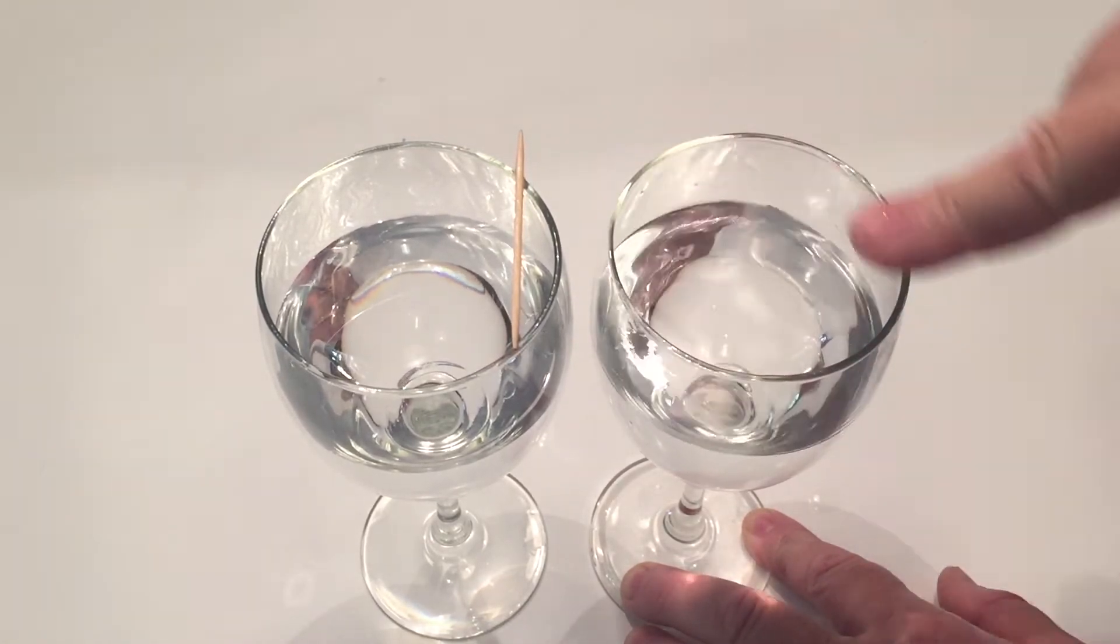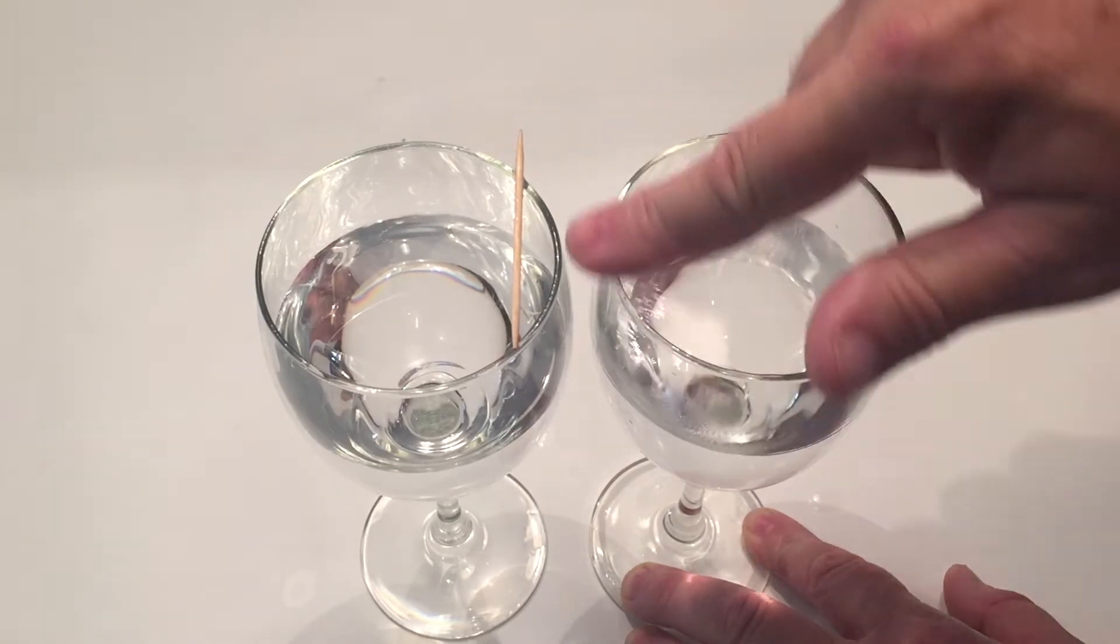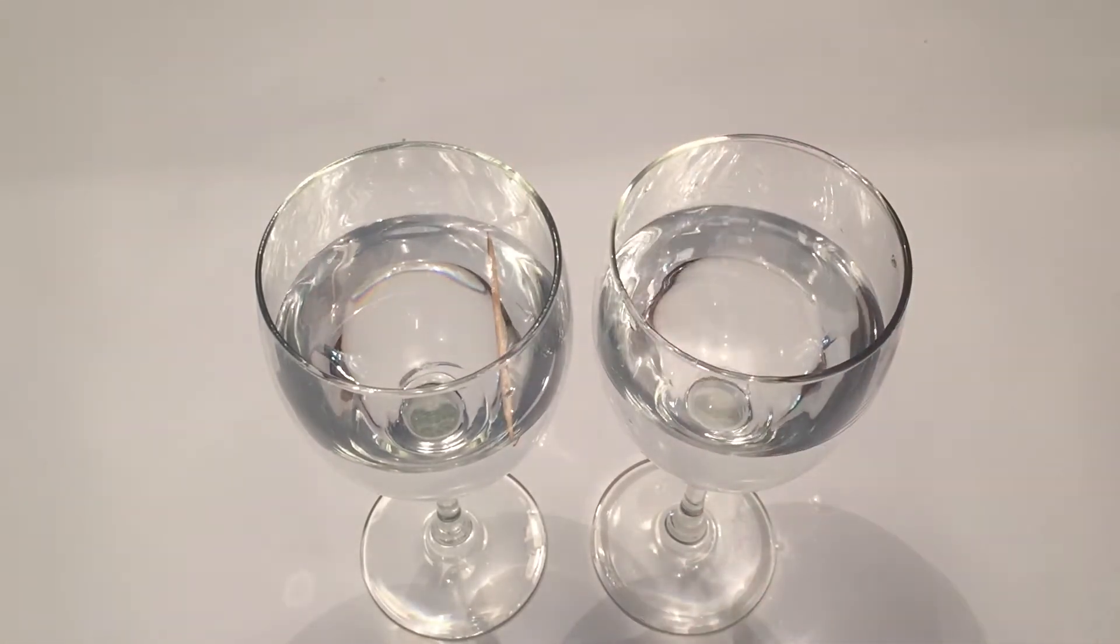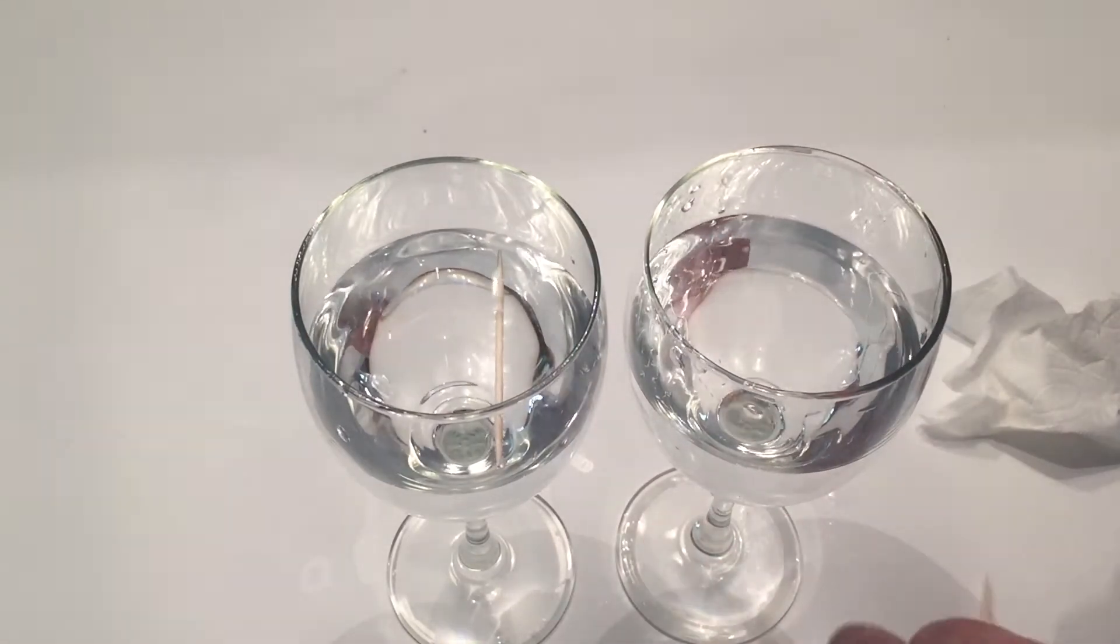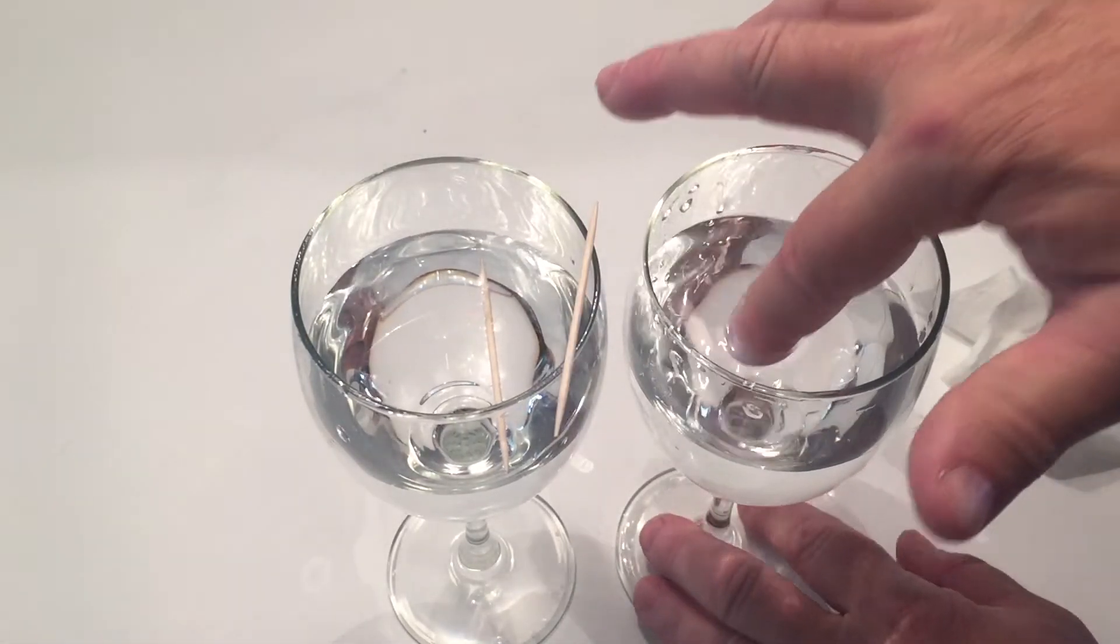You can change the pitch, the high to low of the sound, by adding and subtracting the amount of water in each glass. The volume can be changed only by a bit by increasing or decreasing the pressure of your finger.